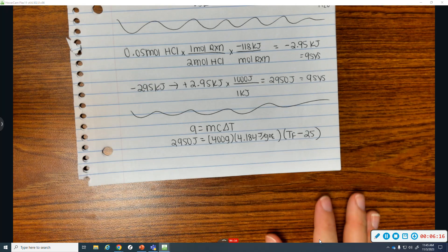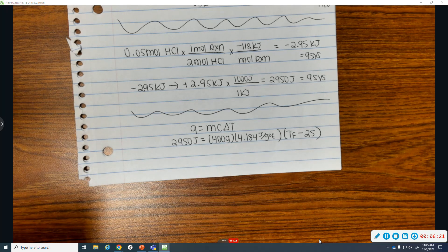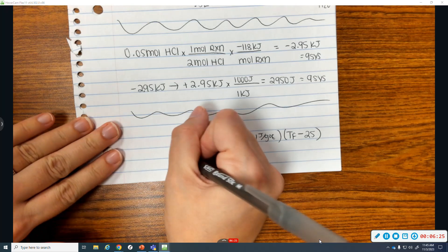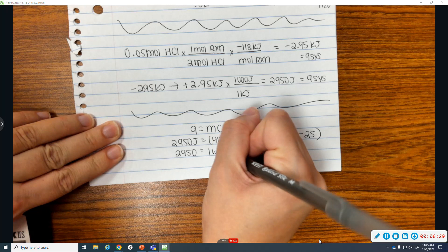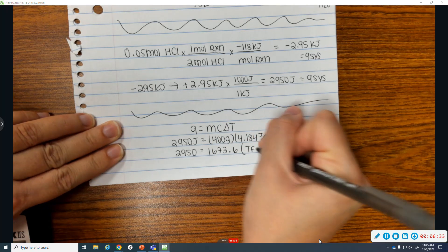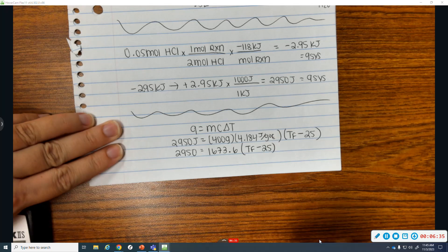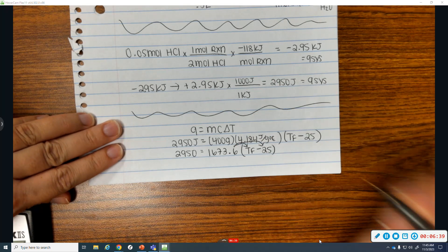So, this will allow me to solve for my final temperature. So, first thing I'm going to do is multiply those two. 400 times 4.184 is 1,673.6 times Tf minus 25. You have to distribute. This needs to go to both.